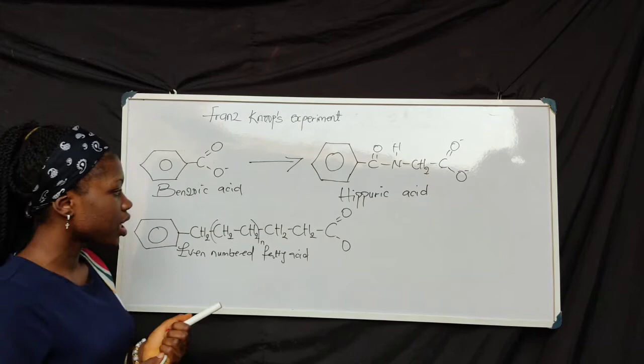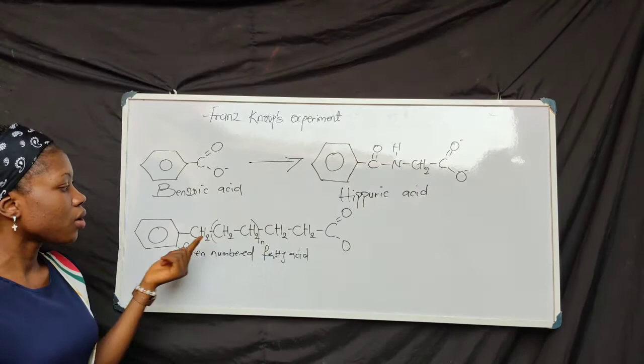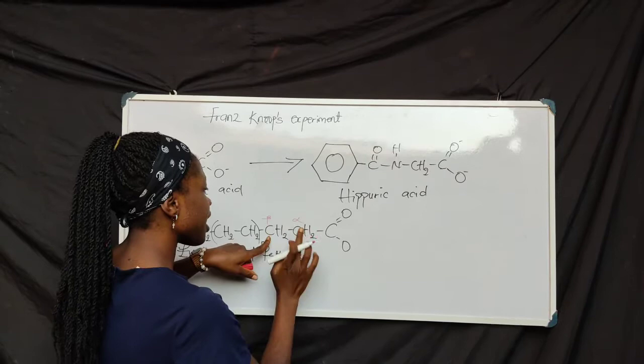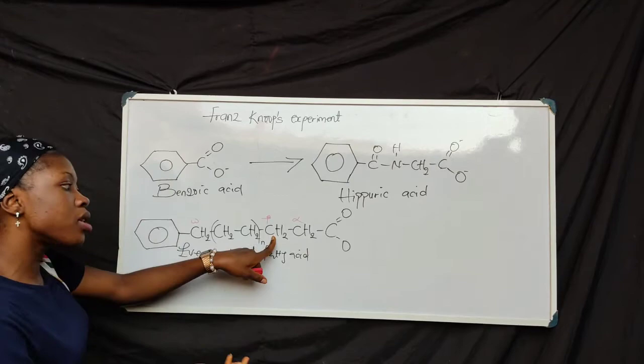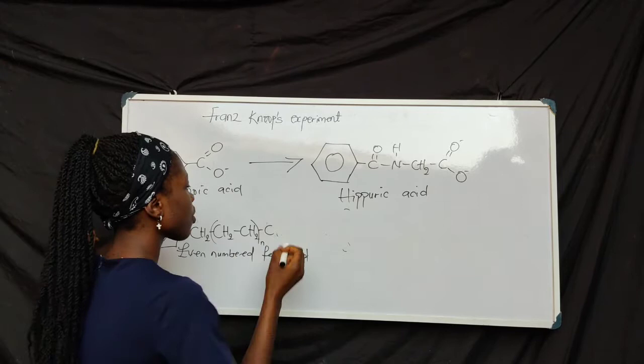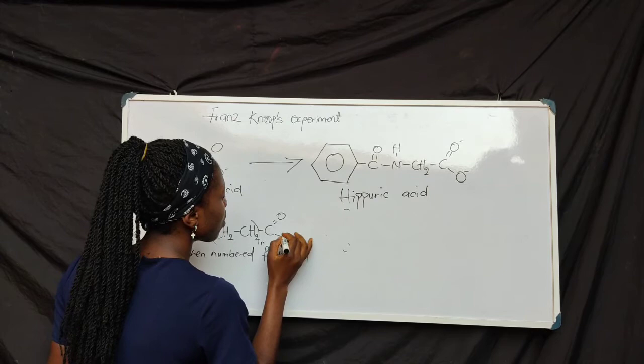This is an even-numbered fatty acid. Knoop also observed that oxidation took place on the beta-carbon. On this fatty acid, here is the beta-carbon, this is the alpha-carbon, and this is the omega-carbon. If oxidation occurs on the beta-carbon, the beta-carbon becomes oxidized to the carbonyl group, and this is split off.